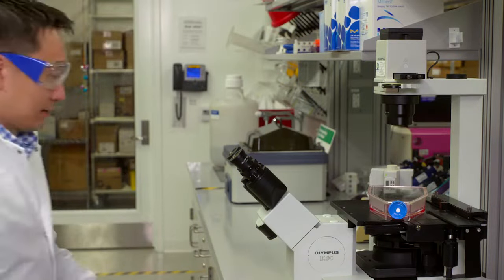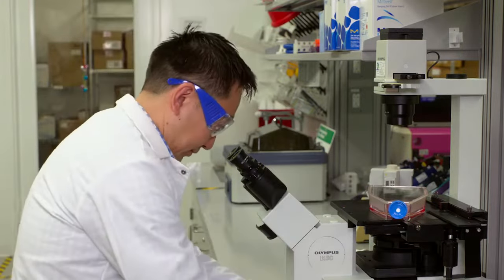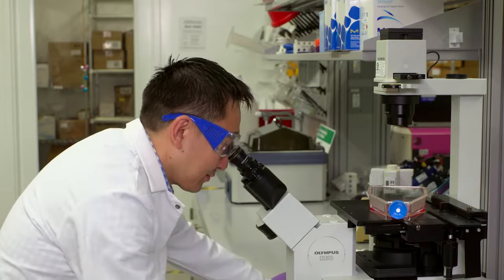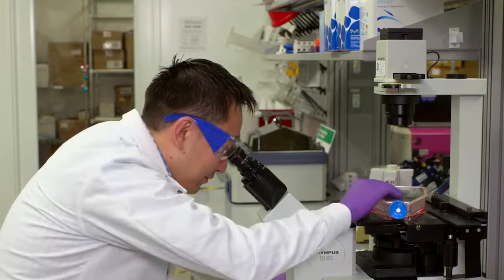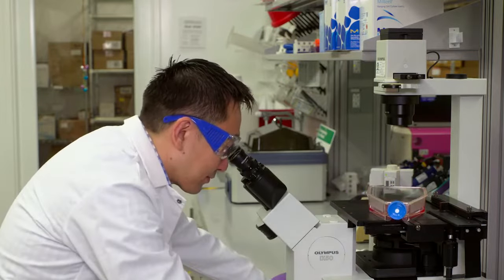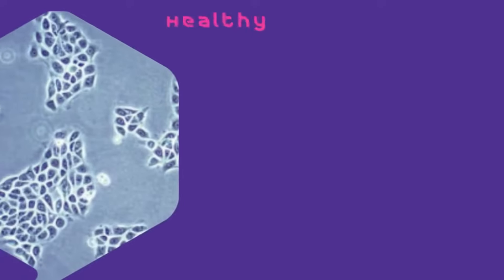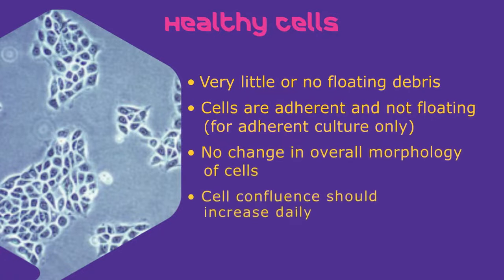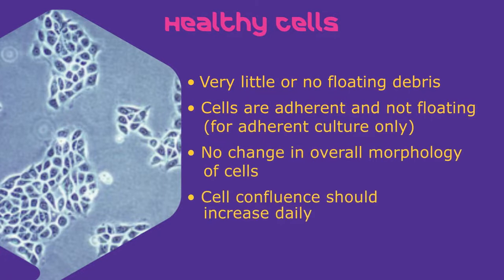Let's start by going over overall monitoring of healthy cells. Please take a closer look. First, by examining cells under the microscope, we can ensure that cells look healthy. You should not be seeing small debris or particles within your field of view, which would indicate cell death and possibly contamination.